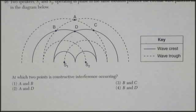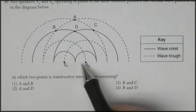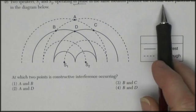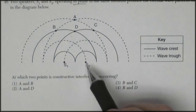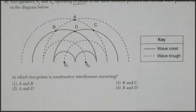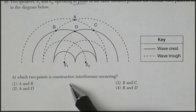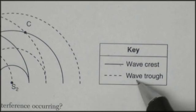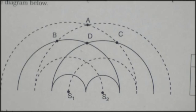Question 46. Two speakers, S1 and S2, operating in phase in the same medium produce the circular wave pattern shown. These are making the exact same sound. The question is, at what two points is constructive interference occurring? If you look at the key, it says the lines are wave crests, the dashed lines are wave troughs. That's kind of traditional.